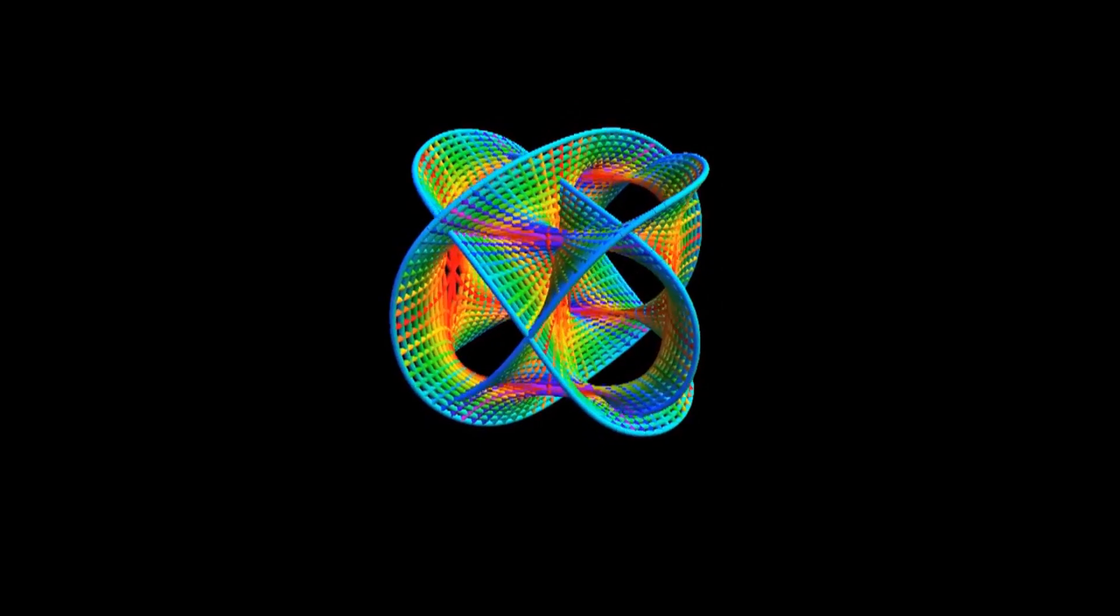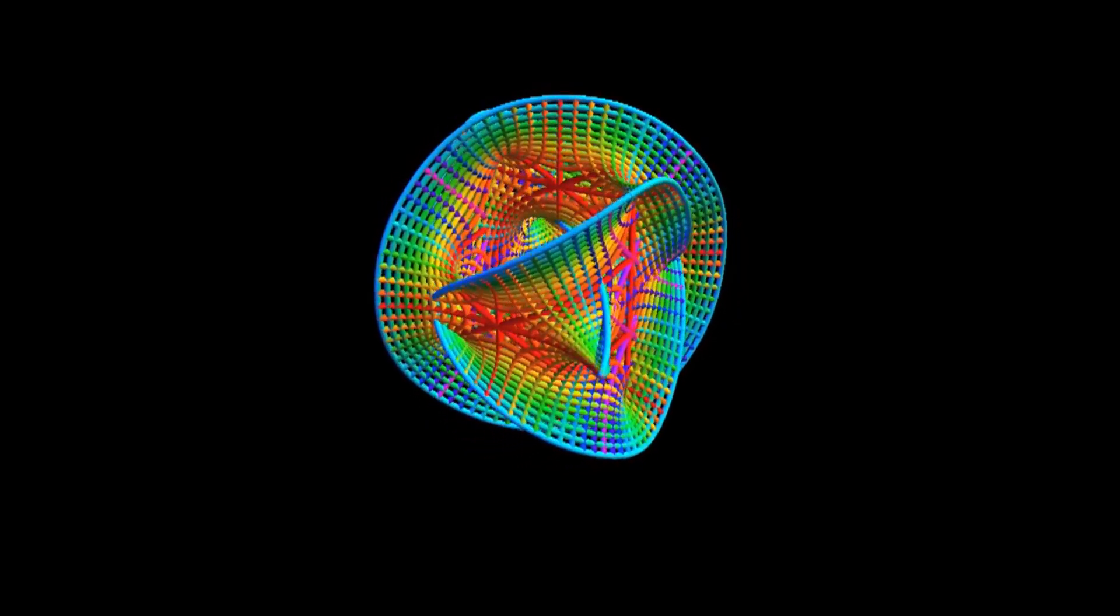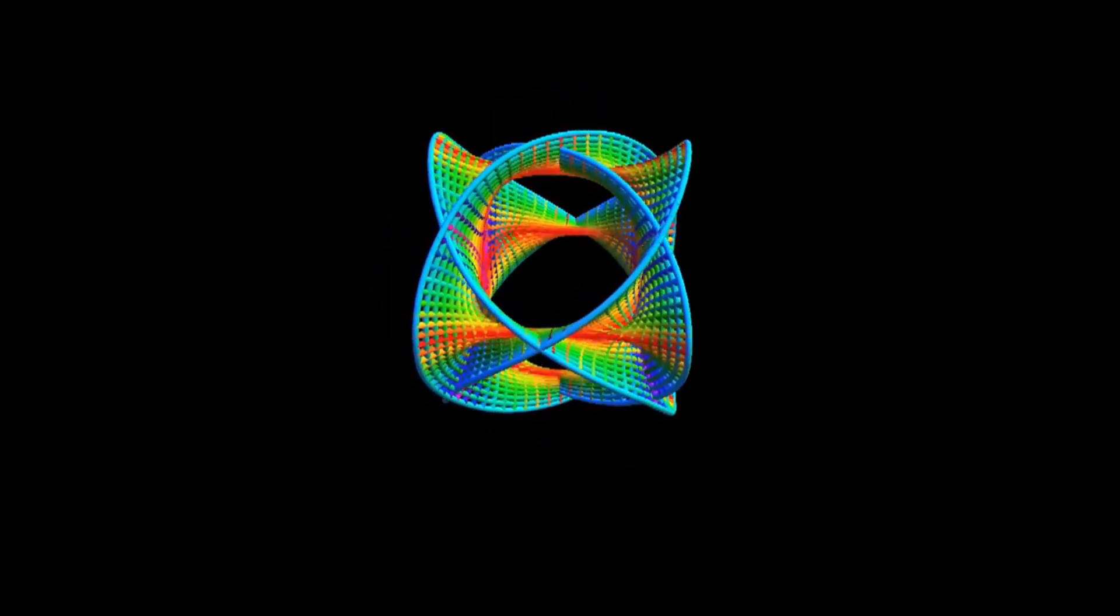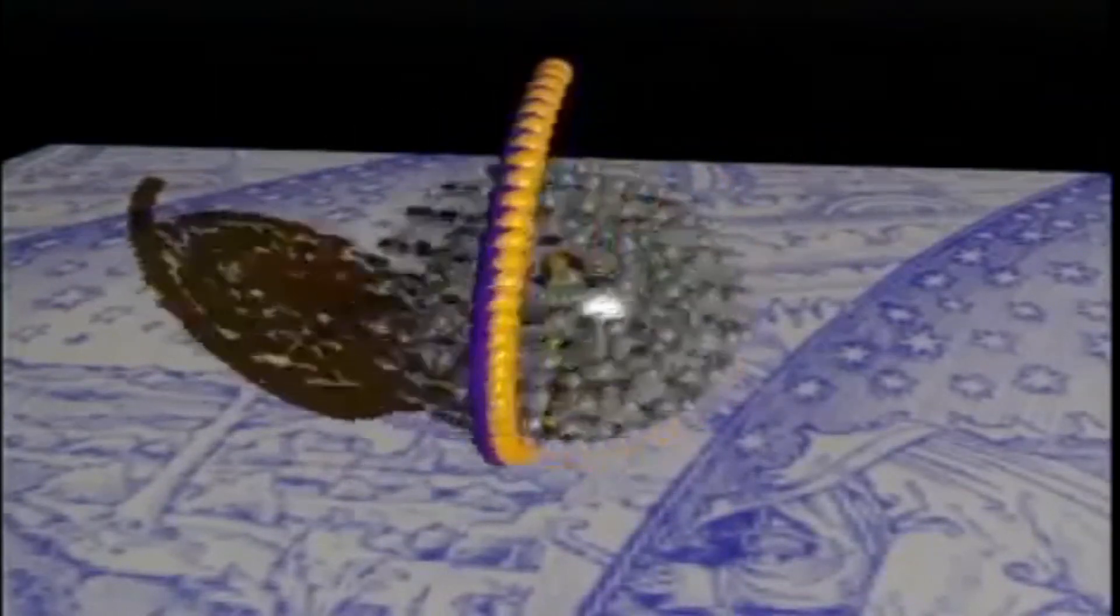And then you and I are only able to see each other because we're passing photons back and forth, which are force particles. They're not spinorial. They come back to themselves after 360 degrees. They don't require 720.